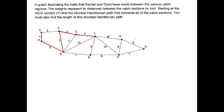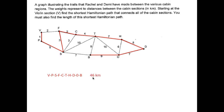C is going to go to T. Then T to — if I have a choice — I could go down the 8 or along the 7. 7 is shorter, so I'm going to take the 7. Now I'm kind of running out of choices. I'm going to continue around to D, then from D to B and I'm done. So that's my Hamiltonian path: V to P to S to F to C to T to H to D to O to B, which is 1+5=6, +3=9, +2=11, +4=15, +7=22, +8=30, +7=37, +9=46. That's 46 kilometers between all of these cabin sections.